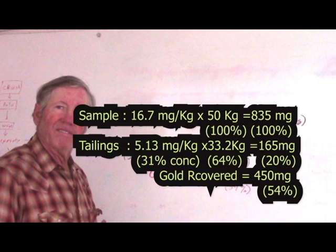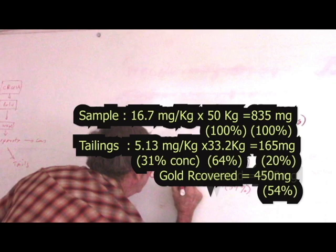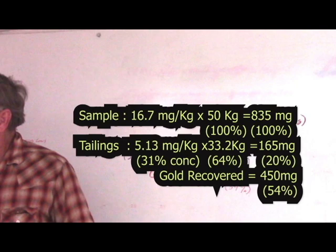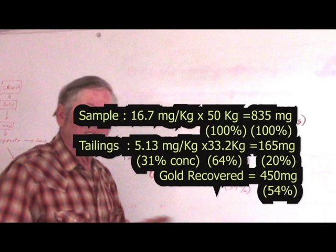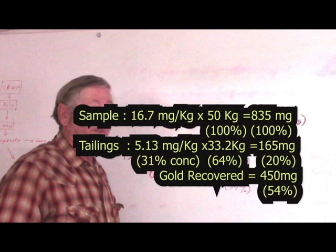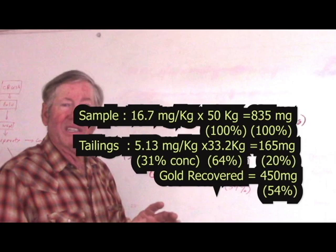In terms of gold recovered, it would be nice to be able to spell, wouldn't it? Anyhow, in terms of gold recovered, we had 450 milligrams. Remember I said about a half a gram. Well, doing some more detailed analysis, a better estimate is about .45 grams. Still some gold in the cons. Don't know how much. But I'm guessing about that much. That winds up with 54%.